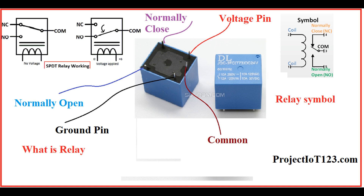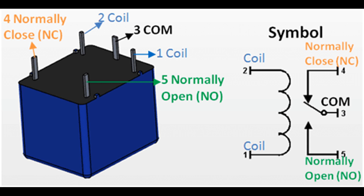Applications: Time delay relays find applications in various scenarios where timing is critical. For example, they are used in industrial automation for sequencing, motor control, and timed events. They are also employed in lighting control, HVAC systems, and other situations where controlled delays are necessary. Protection and Coordination: Time delay relays can be used for protective functions, preventing unnecessary tripping or switching of circuits during transient conditions. They help coordinate the timing of events in a system, ensuring proper sequencing and avoiding issues like inrush currents.